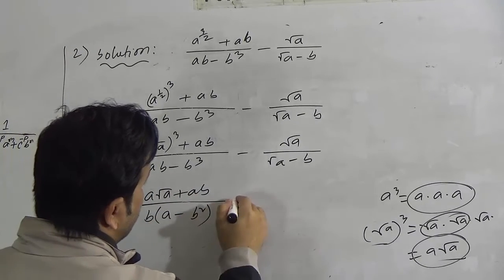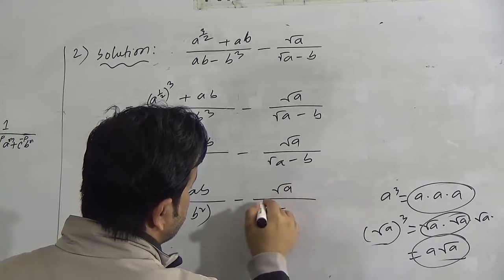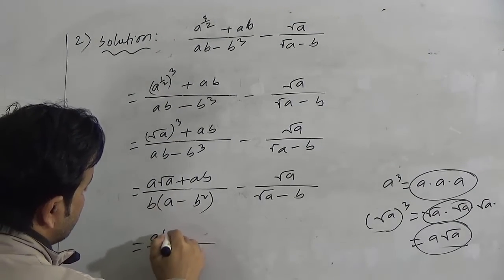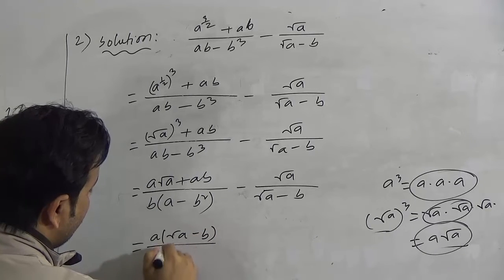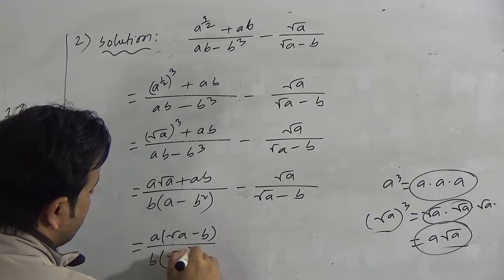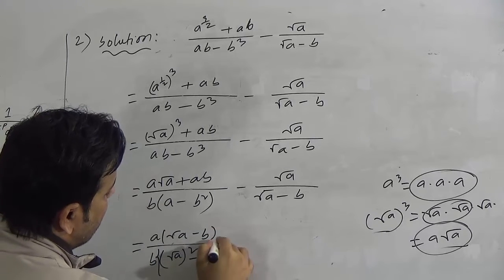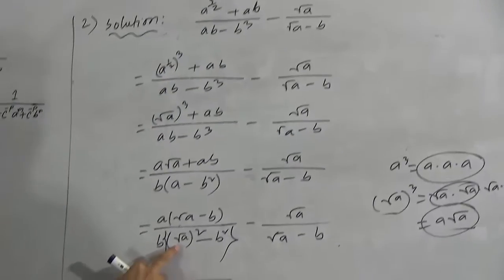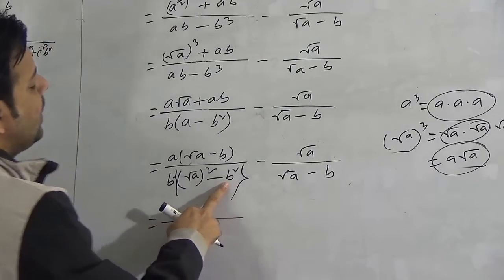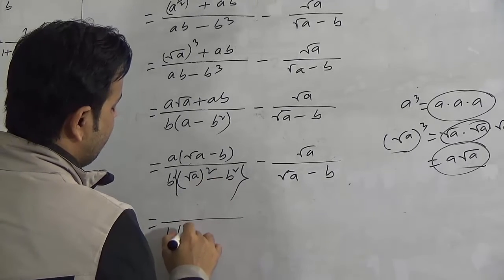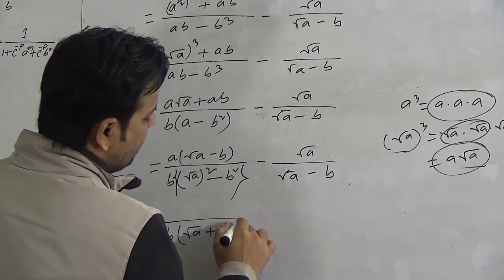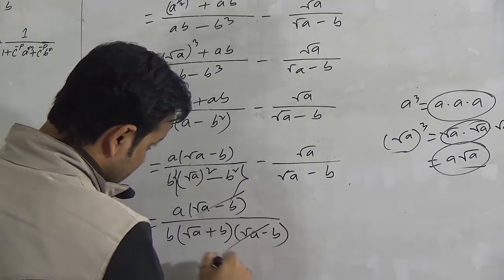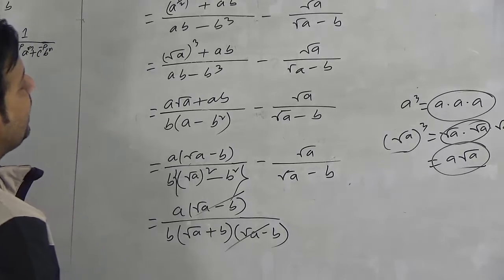So we can write square root a whole cubed as a times square root a, plus ab. Now we can take b as common from the denominator, giving a minus b squared. In the numerator we can take a as common, writing a as square root a whole squared minus b squared. Then considering square root a as one variable and b as another, we apply the formula a squared minus b squared equals (a+b)(a-b), giving square root a plus b into square root a minus b.